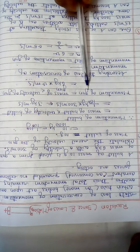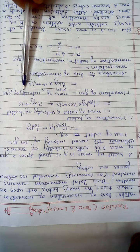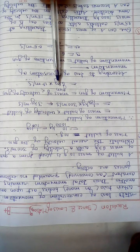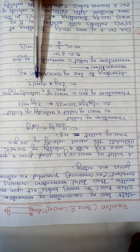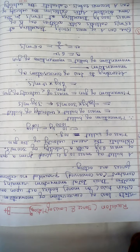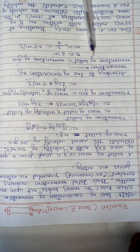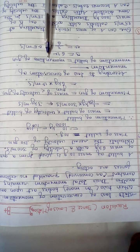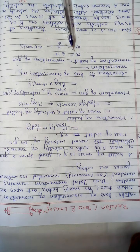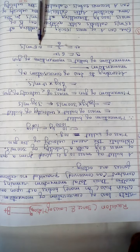Now the momentum of the gun equals mass of gun into velocity of gun. Mass of gun is 6 kg and let us assume the velocity of the gun is V m/s. According to the law of conservation of momentum, momentum of bullet equals momentum of gun, which gives V equals 3 upon 6, so V equals 0.5 meters per second.